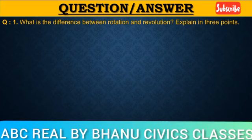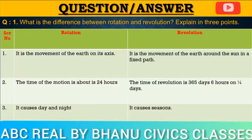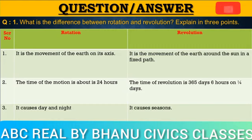Question and answer. Question number one: What is the difference between rotation and revolution? Explain in three points. The answer of this question is — Rotation: It is the movement of the earth on its axis. The time of this motion is about 24 hours. It causes day and night.